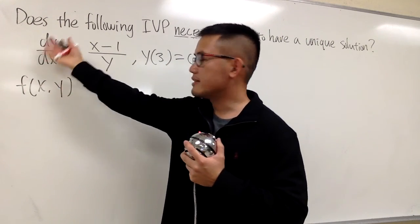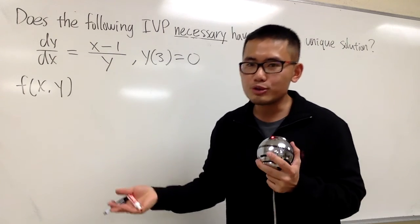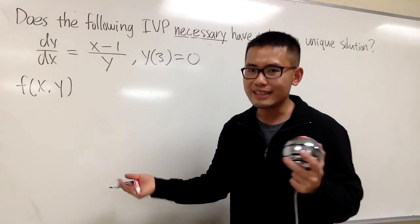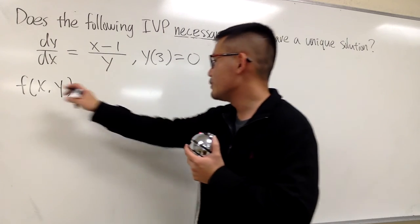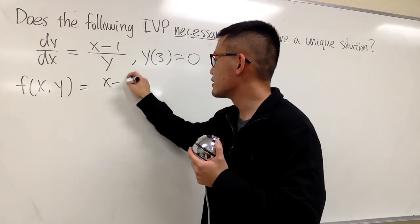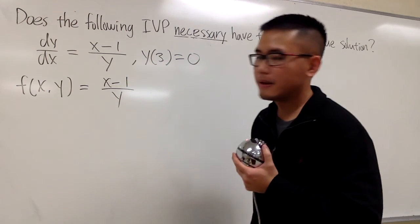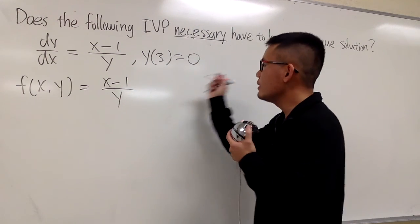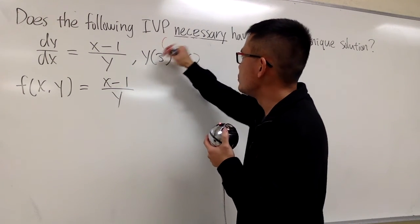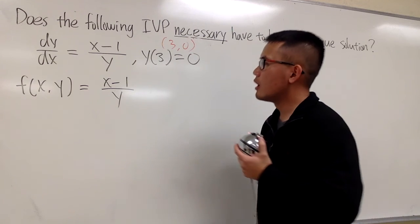Sometimes, if dy/dx is not isolated, just do some algebra to isolate that. Anyways, this is what we have: f(x, y) = (x minus 1) over y. And the point now is (3, 0).